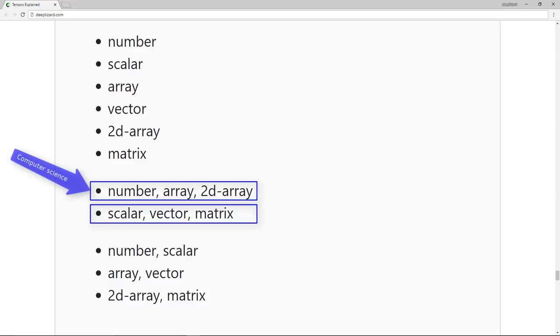While the second group, scalar, vector, and matrix are terms that are typically used in mathematics. We often see this kind of thing where different areas of study use different words for the same concept. The terms in each group correspond to one another as we move from left to right.